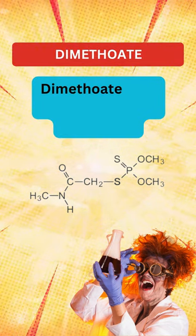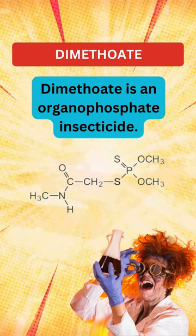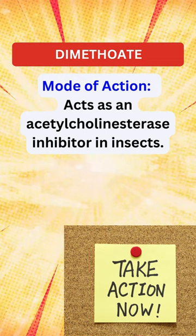Dimethoate. Chemistry. Dimethoate is an organophosphate insecticide. Mode of action: it acts as an acetylcholinesterase inhibitor in insects.